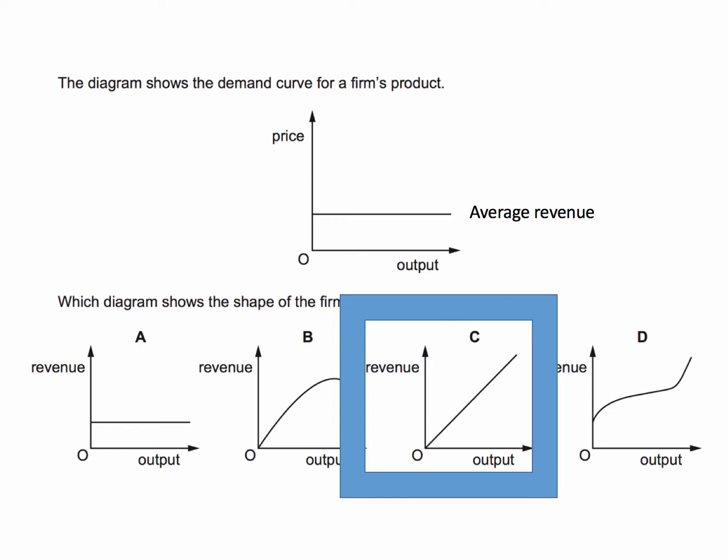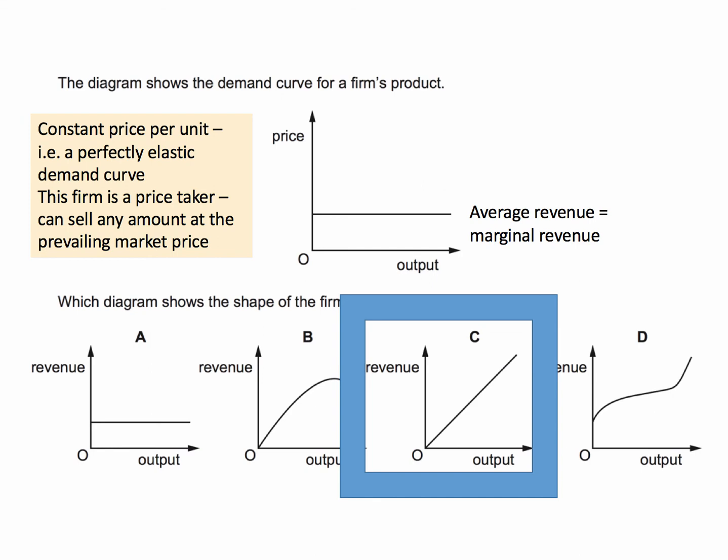If that's the case, the marginal revenue will be the same as the average revenue. Every extra unit sold, the firm will be getting the same price per unit. So what that means is they have a constant price per unit—a perfectly elastic demand curve.